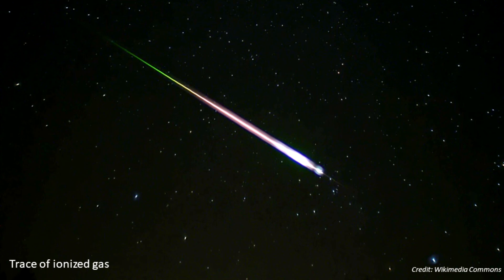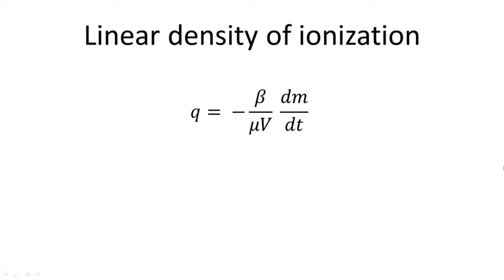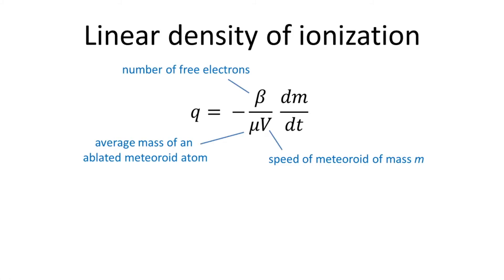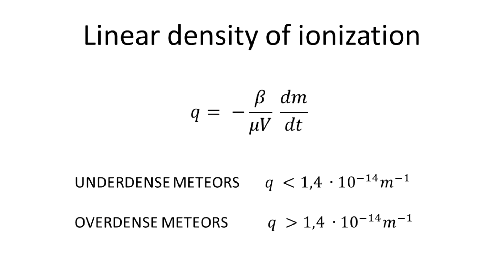A side effect that occurs when a meteor passes through the Earth's atmosphere is an ionized gas that we see as a light trail in the sky. The linear density of ionization, that is, the number of electrons per meter, is determined according to the formula on the screen. Traces of ionized gas have different behavior, which is caused by different electron line densities. According to that, we have underdense and overdense meteors. At underdense meteors, the electron line density is below the value shown on the screen, while overdense meteors have a line density above that value.